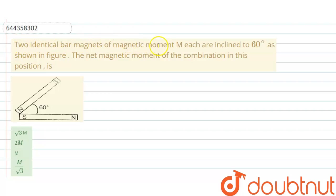Two identical bar magnets of magnetic moment M each are inclined at 60 degrees as shown in figure. The net magnetic moment of the combination in this position is... and there are four options given.